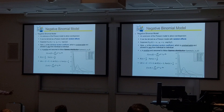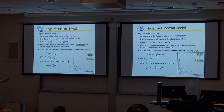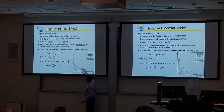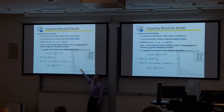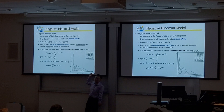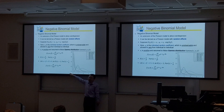Gamma distribution is very flexible. By choosing different parameters, you can approximate many different types of distributions. You can even restore something like a bell curve similar to the normal distribution, but it's always non-negative — starting from zero all the way to positive infinity. It won't be perfectly symmetric since it can't go below zero.